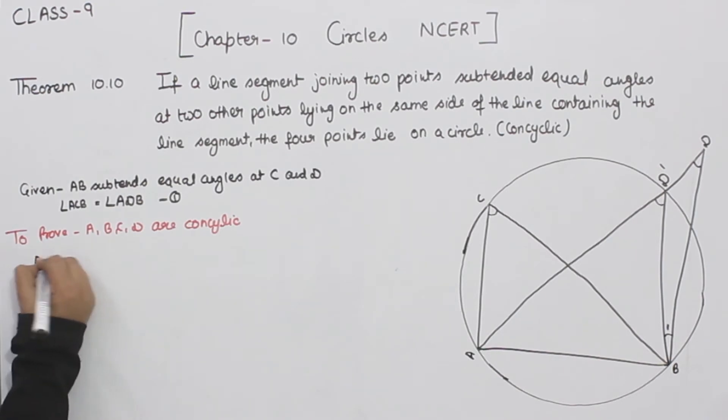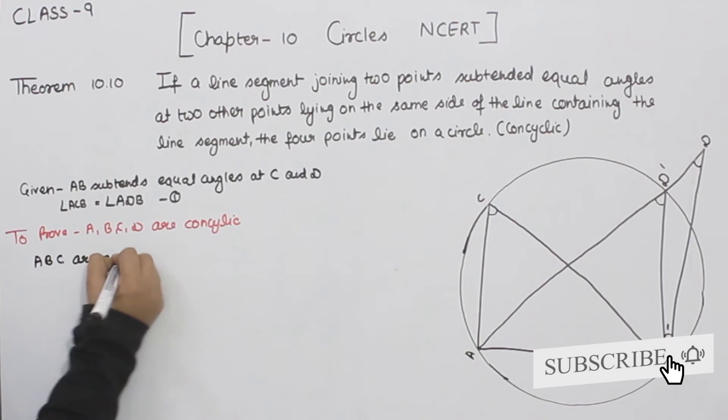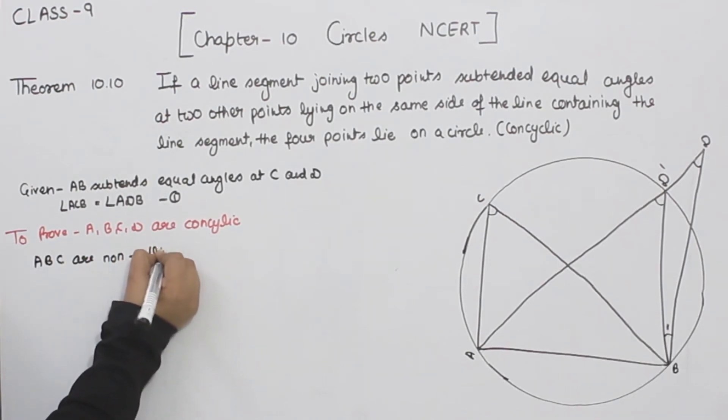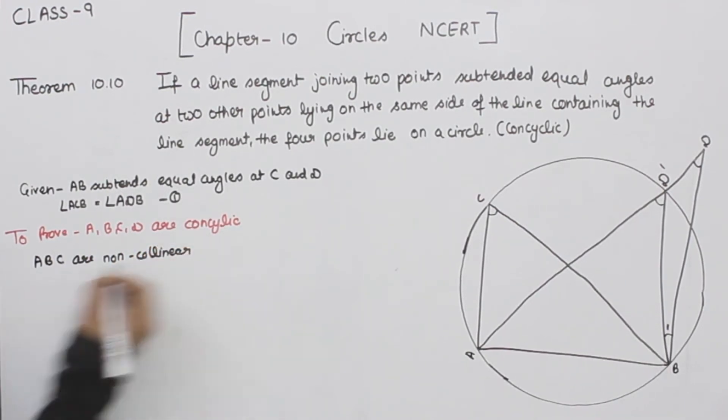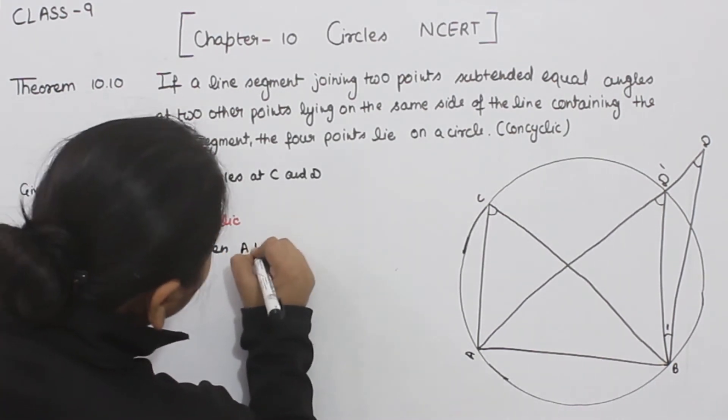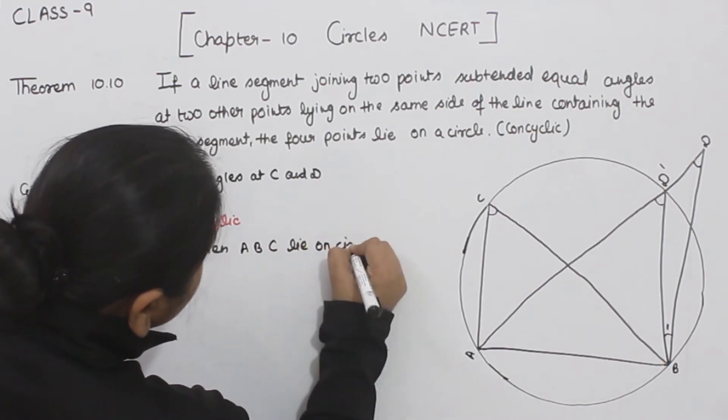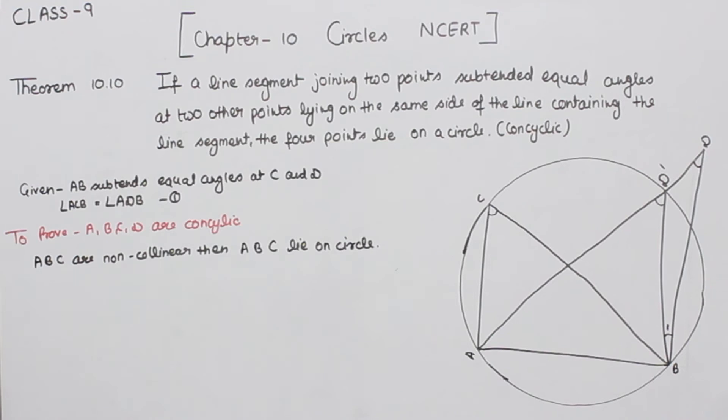Now we know that the points A, B, C are non-collinear, so A, B, C lie on a circle.